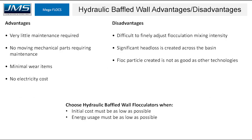The advantages of this type of flocculator are that there is very little maintenance required, no moving mechanical parts, minimal wear items, and no electricity costs. Disadvantages are that it's difficult to finely adjust mixing intensity since all you can control is the flow, there's significant head loss created, and the floc particle produced is not as good as other technologies. You might choose hydraulic baffled wall flocculators when initial costs and energy usage must be as low as possible.